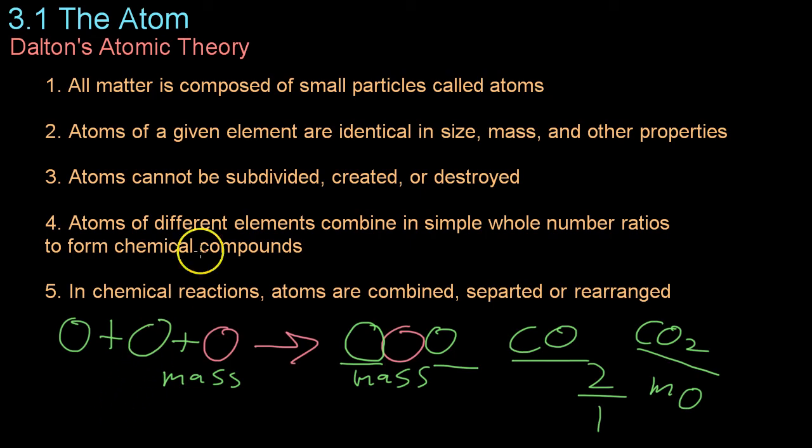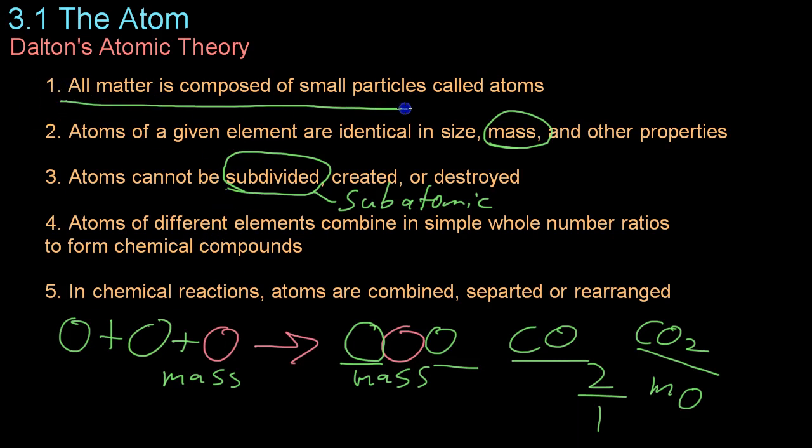We now know that not all of these assertions are true. For example, atoms are actually not the most basic unit of matter. They can be subdivided into what are known as subatomic particles, things that are smaller than atoms. As well, elements are not always identical in mass. They can vary slightly in the mass, which is something we'll discuss later on in this playlist. But the most important assertions that we get from Dalton's theory is that all matter is composed of small particles called atoms and that all atoms have different characteristics from every other atom. That is, they differ in their chemical properties.